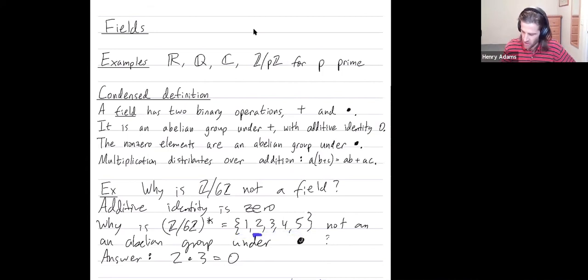Multiplication is not even a binary operation on the set, because I take two numbers in the set, 2 and 3, I multiply them. Mod 6, I get an element that's not in the set. So once I remove 0, it's not an abelian group under multiplication, because multiplication is not even a binary operation after I remove 0.